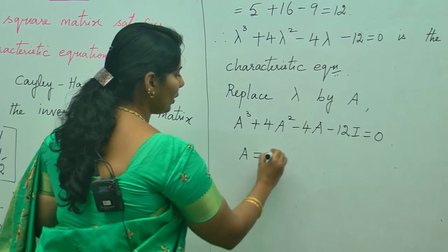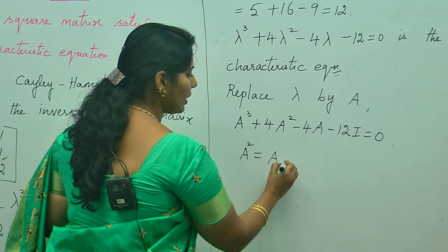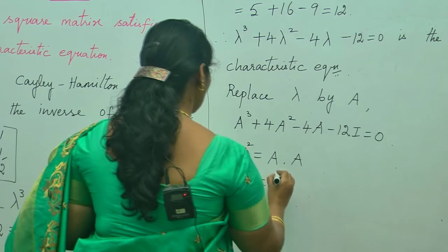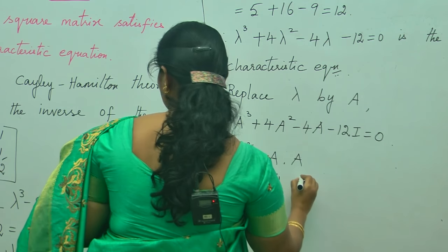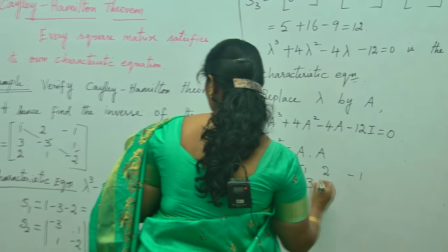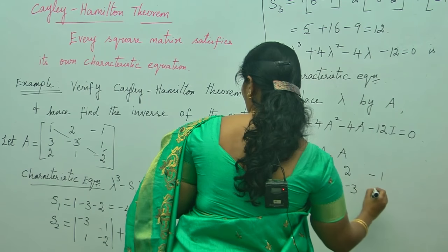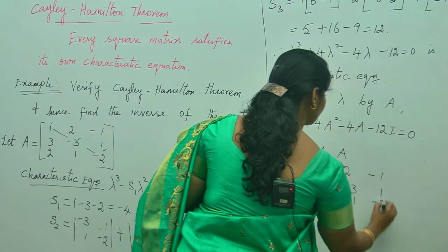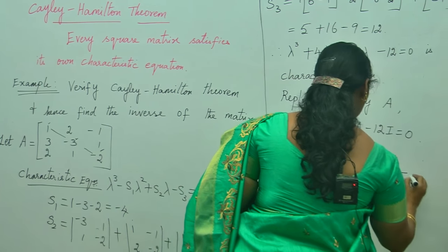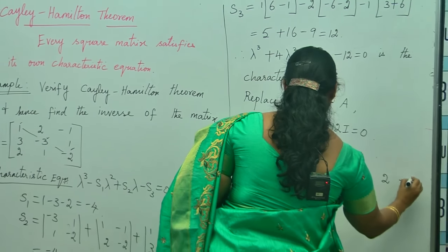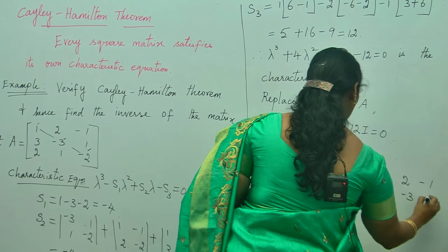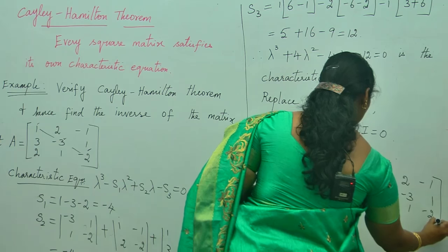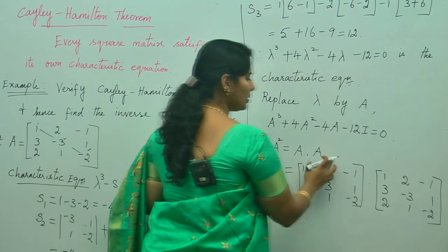First, we need to find the A squared matrix. A squared equals A times A — the given matrix times itself: [1, 2, -1; 3, -3, 1; 2, 1, -2] times [1, 2, -1; 3, -3, 1; 2, 1, -2]. Now multiply these two matrices rows into columns. For the first element: 1×1 + 2×3 + (-1)×2 = 1 + 6 - 2. These are the matrices A times A.